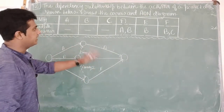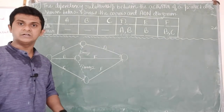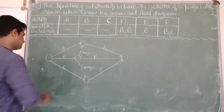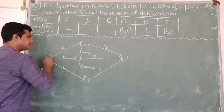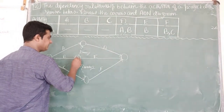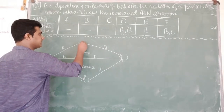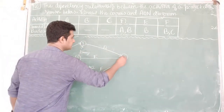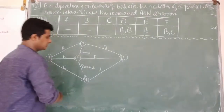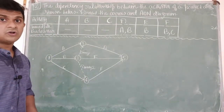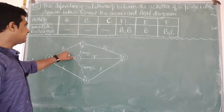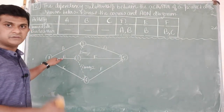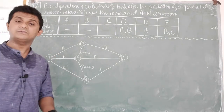This is our completed arrow diagram. Now we have to use Fulkerson's rule to number the events. This is our first event, then the second event, third, fourth, and fifth event. This is how you draw an arrow diagram — by placing activities on the arrows and naming the events using Fulkerson's rule. Thank you for watching the video.